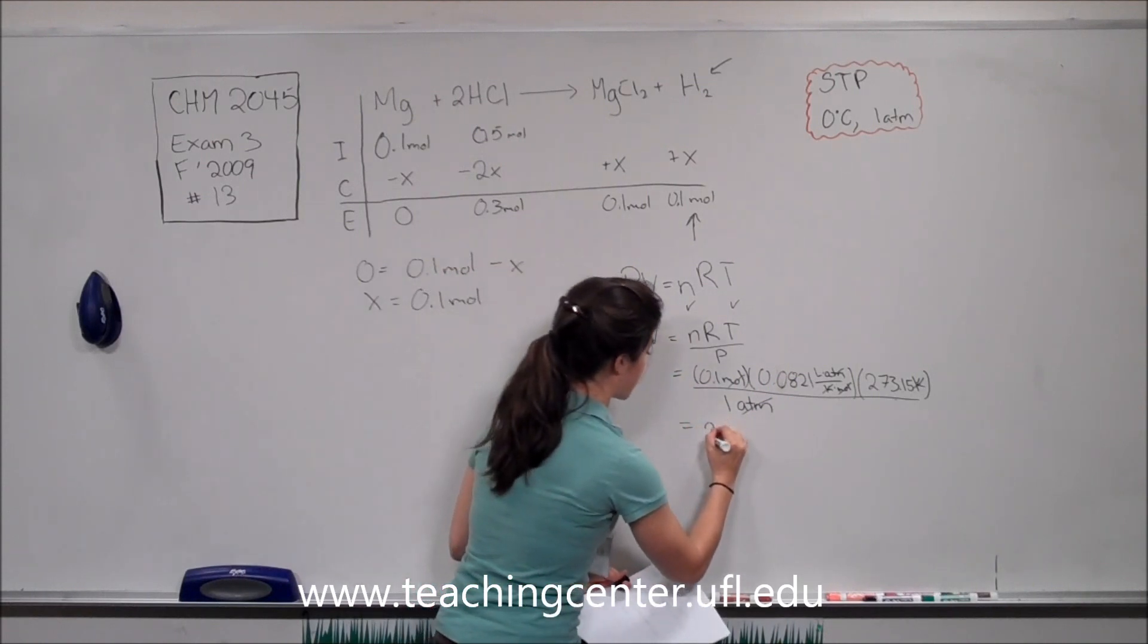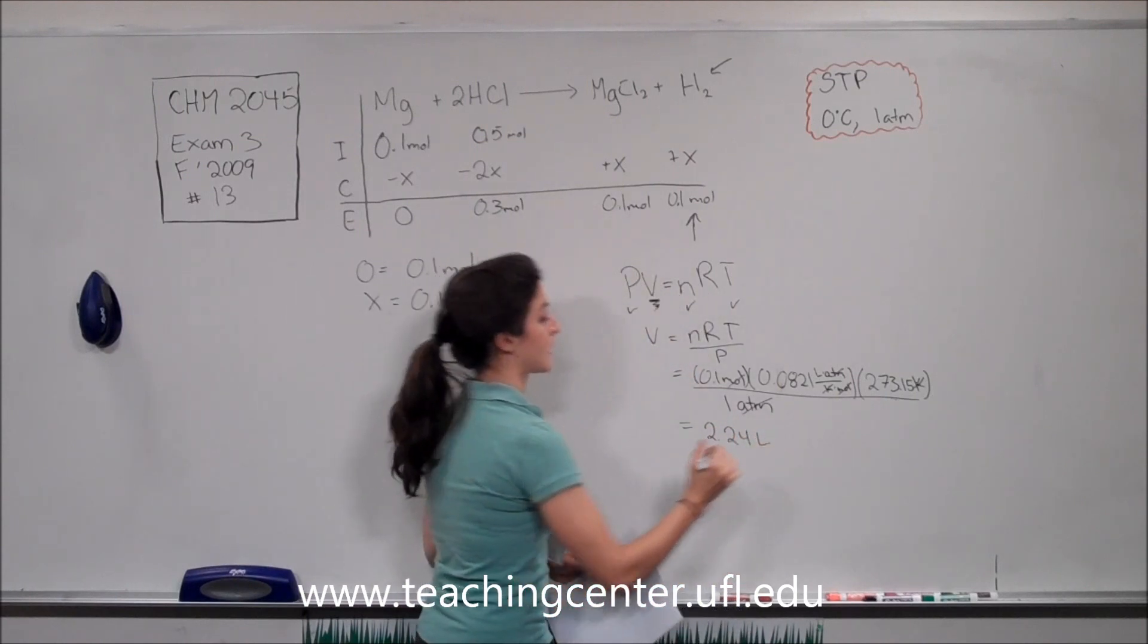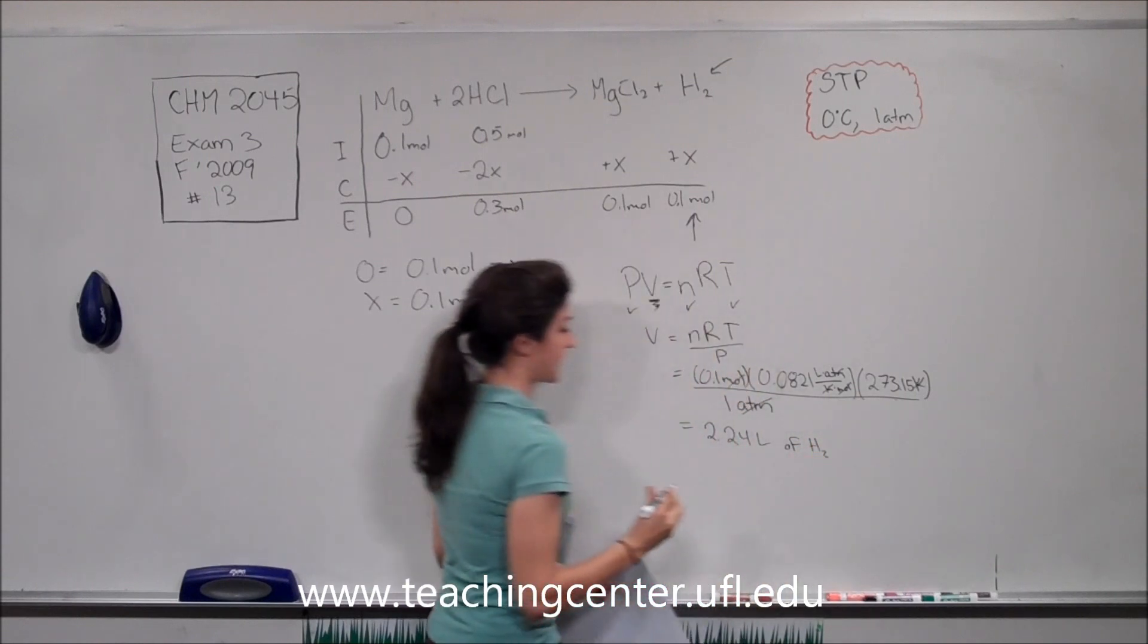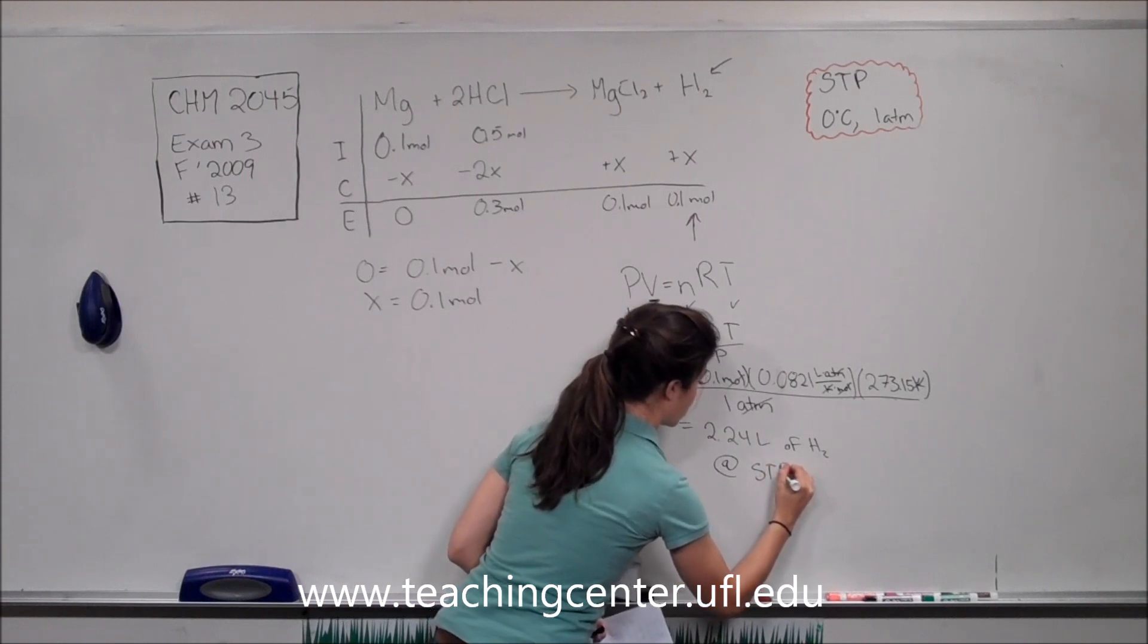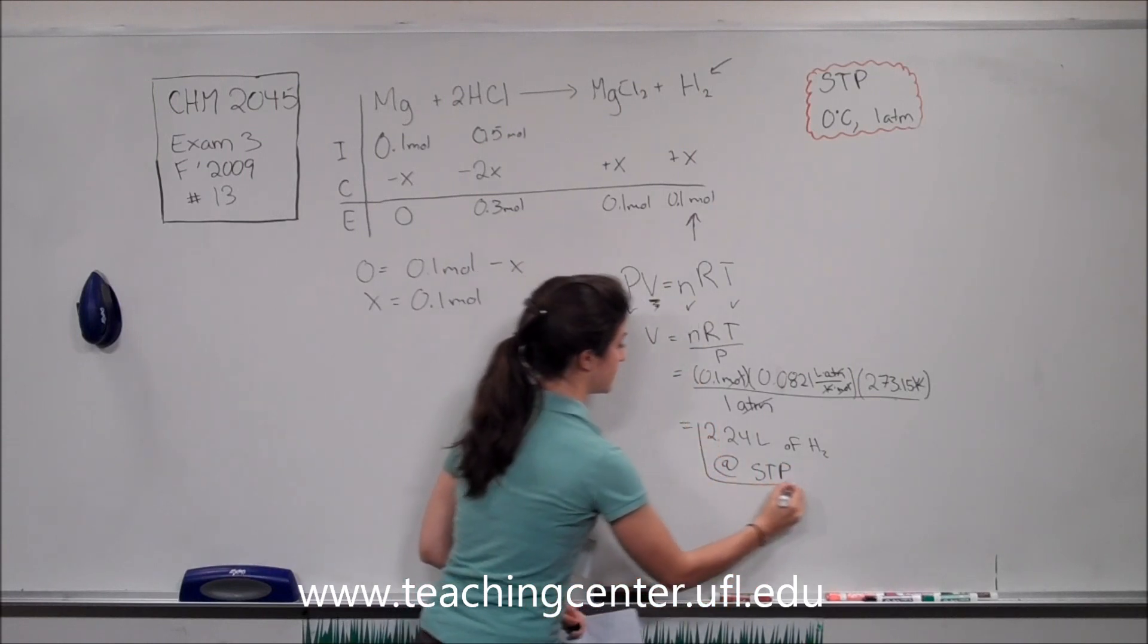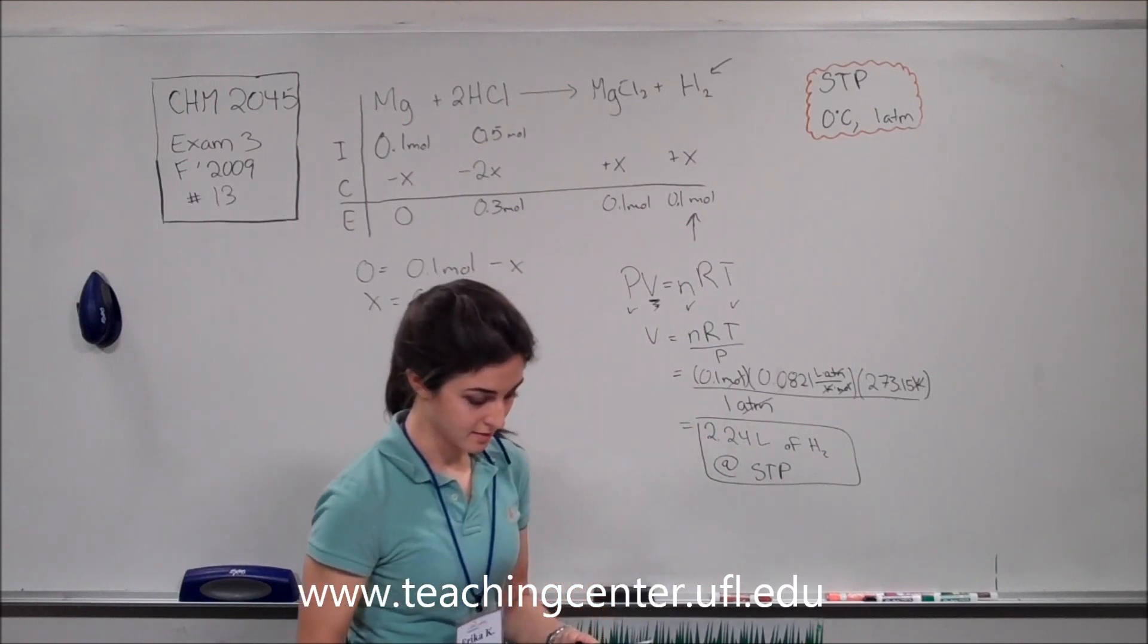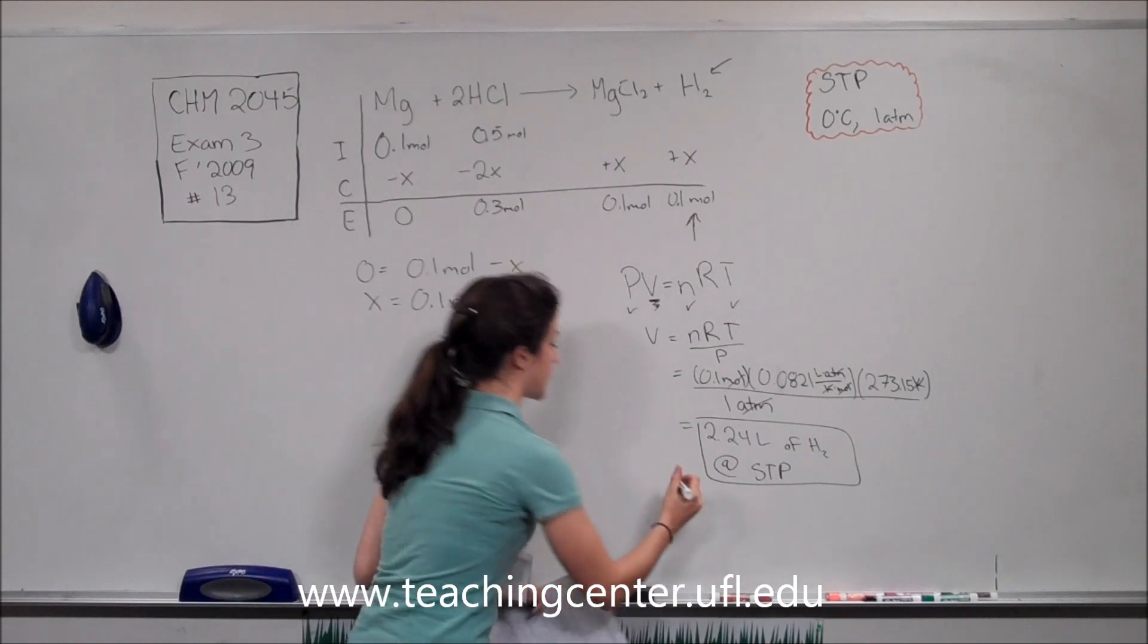Plugging all this in, we end up with 2.24 liters of hydrogen gas at STP. And this is answer choice A.